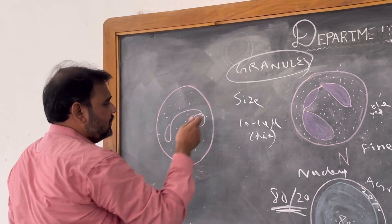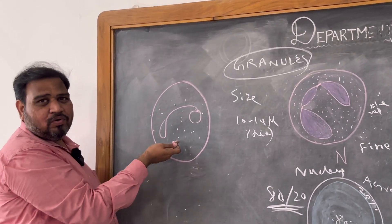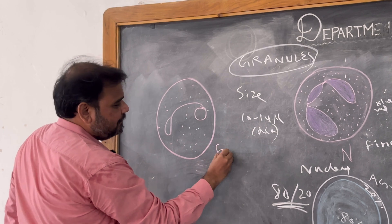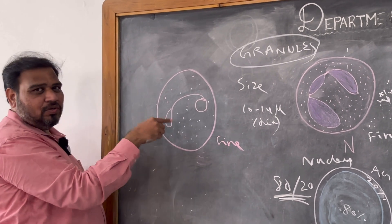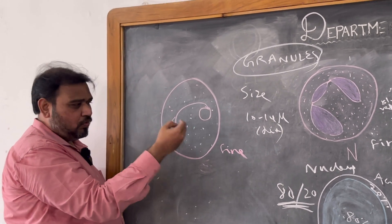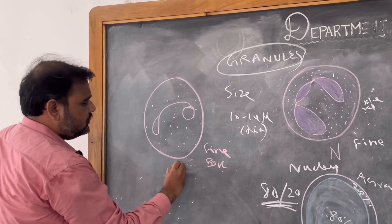First itself I told: it is granules fine or coarse? Fine. Color: is it taking both eosin hematoxylin, red color, blue color, or single color? Both. So obviously this is neutrophil.